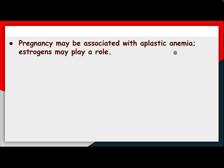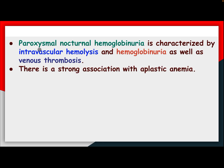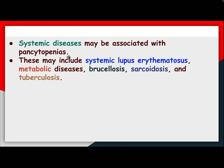Pregnancy may be associated with aplastic anemia; estrogen may play a role. Paroxysmal nocturnal hemoglobinuria is characterized by intravascular hemolysis, hemoglobinuria, and venous thrombosis, with a strong association with aplastic anemia. Systemic disease may also be associated with pancytopenia, including systemic lupus erythematosus, metabolic disease, brucellosis, sarcoidosis, and tuberculosis.